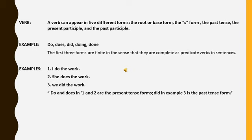The first three forms are finite in the sense that they are complete as predicate verbs in sentences. So here are some examples. Number 1: I do the work. Number 2: She does the work. Number 3: We did the work. So do and does in examples 1 and 2 are the present tense forms. Did in example 3 is the past tense form.